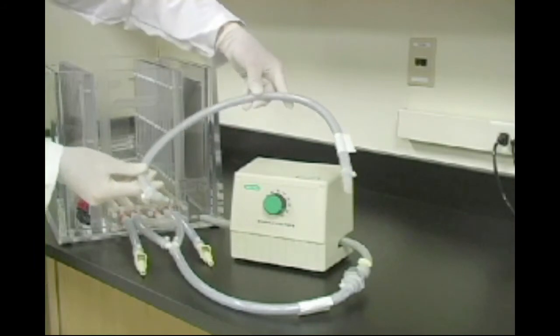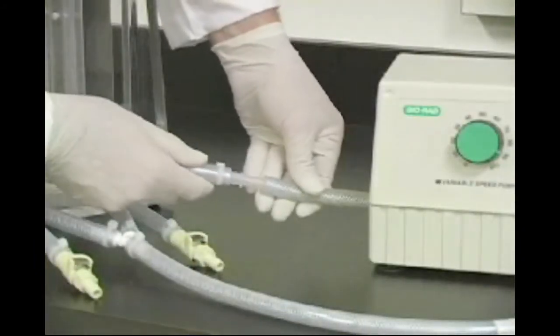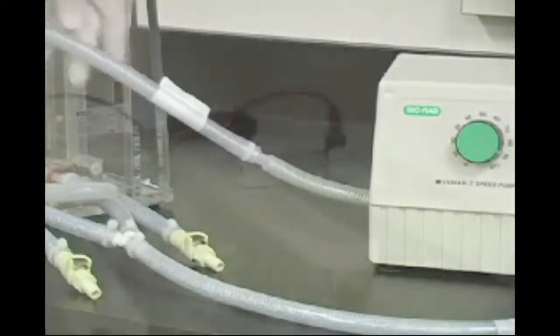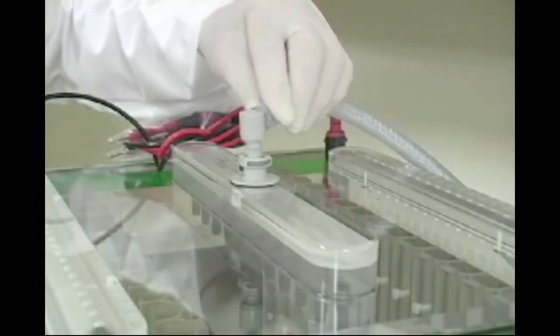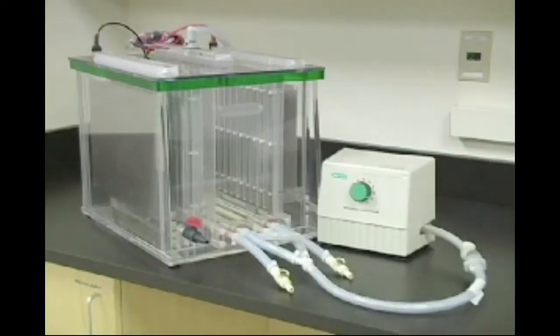Take the buffer exhaust tube and connect it to the tubing on the other side of the pump. Insert the quick connect fitting into the manifold located on the lid of the DodecaCell. The buffer recirculation pathway is now complete.